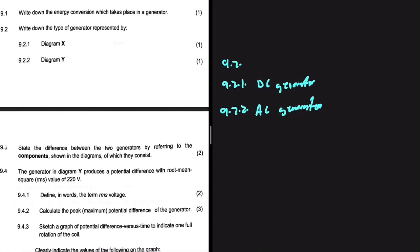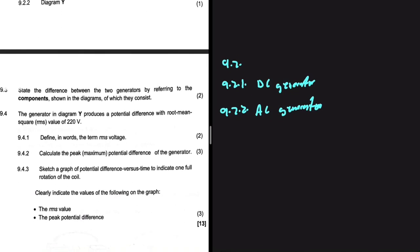You are able to tell because in diagram X we have split rings, and in diagram Y, the AC generator, we have slip rings. So if you get the answers to 9.2, then you should get 9.3 correct, because how did you arrive at your answer for 9.2 if you're getting 9.3 wrong? That doesn't make any sense.